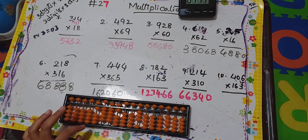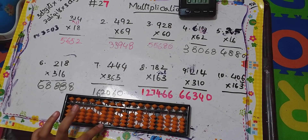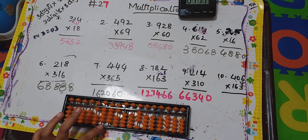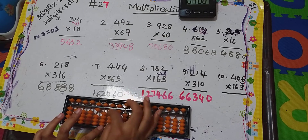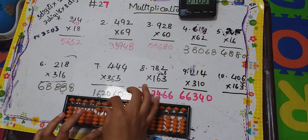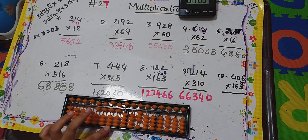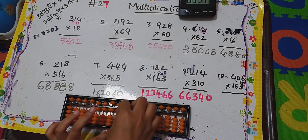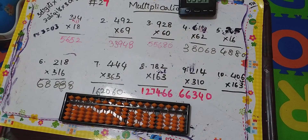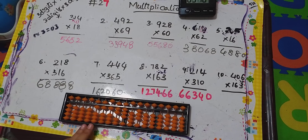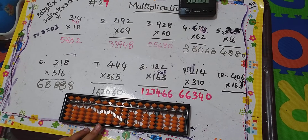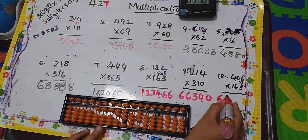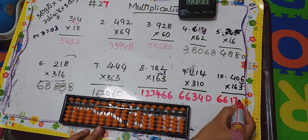Next we have the last digit 3. Before that I have to leave these two columns and start from here. 4 threes are 12 — 1, 2. How to add 2 here: plus 10 minus 8, done — 12. Next, 0 threes are 00 — done. Next, 6 threes are 18 — 1 and 8. So the answer is 66,178.